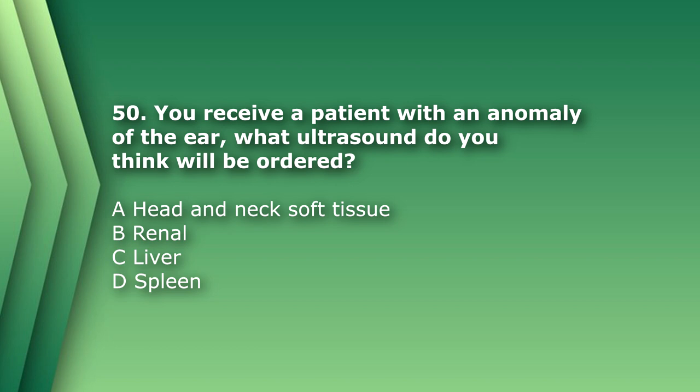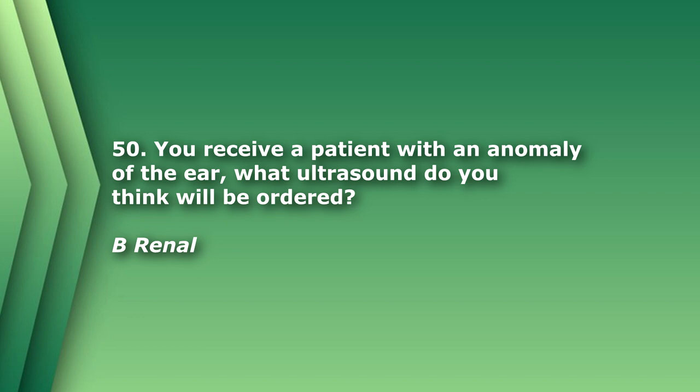Number 50. You receive a patient with an anomaly of the ear. What ultrasound do you think will be ordered? A. Head and neck soft tissue. B. Renal. C. Liver. D. Spleen. The answer is B, renal. Ear malformations are associated with an increased frequency of clinically significant structural renal anomalies compared with the general population.